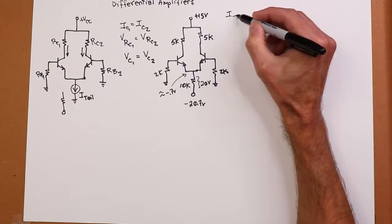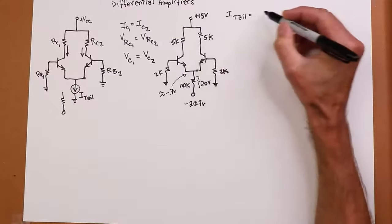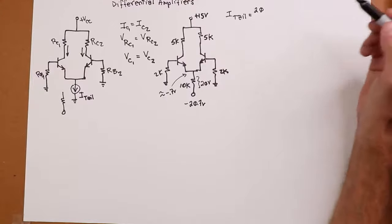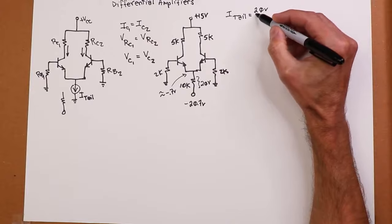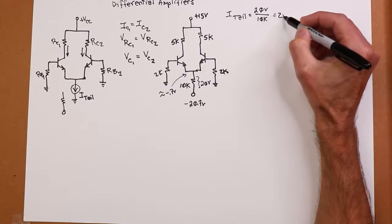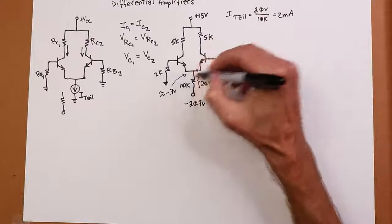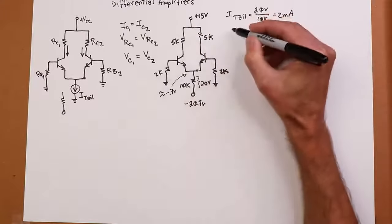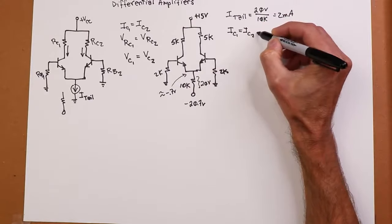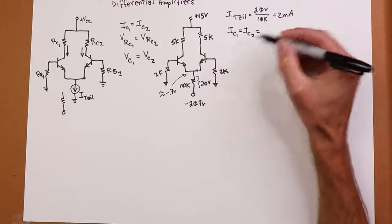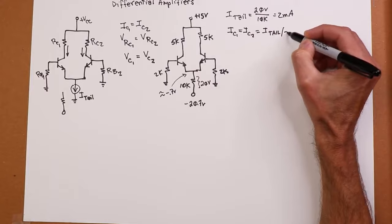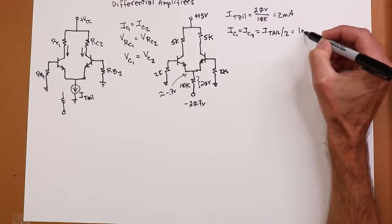So Ohm's law says that your tail current should be 20.7 minus the 0.7, which is 20 volts, dropping across 10K or 2 mils. If these two things are perfectly matched, then IC1 equals IC2, and through Kirchhoff's current law, they have to add up to ITail. In other words, equals ITail divided by 2. Or in our case, that's a milliamp each.